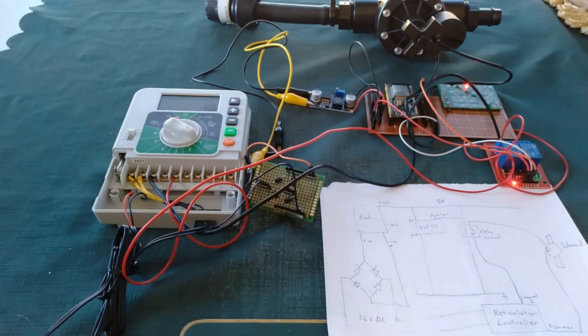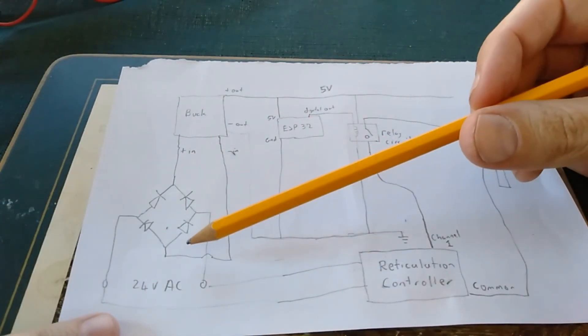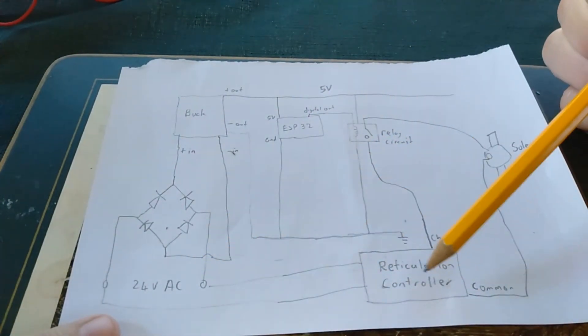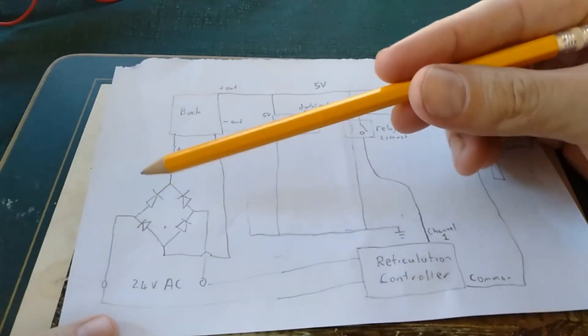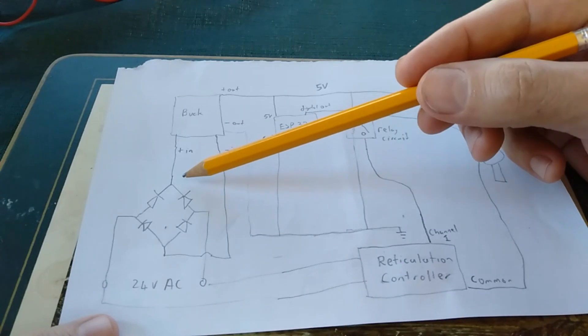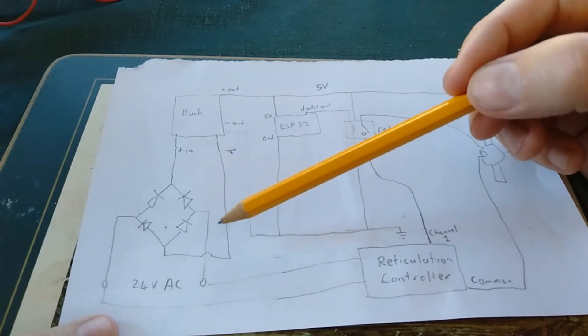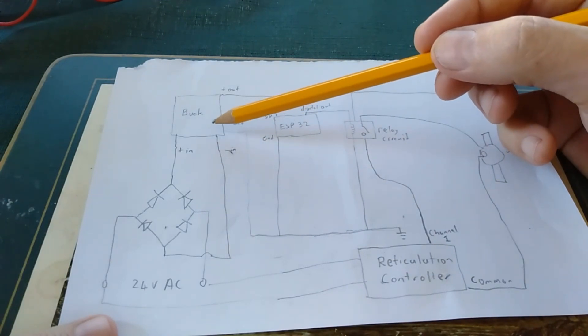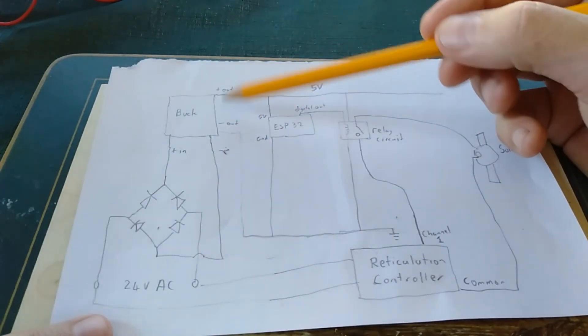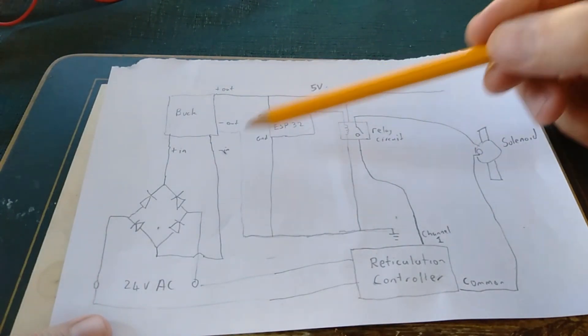So let me walk you through this circuit a bit further. 24 volts AC comes in for powering the reticulation controller and we're siphoning that 24 volts AC off to our full bridge rectifier. Then the positive side of that goes into our buck converter positive in and our negative side goes into the negative of the buck converter in. Then out of our buck converter I've got it set for 5 volts so it's giving a 5 volt rail up here and a ground rail.